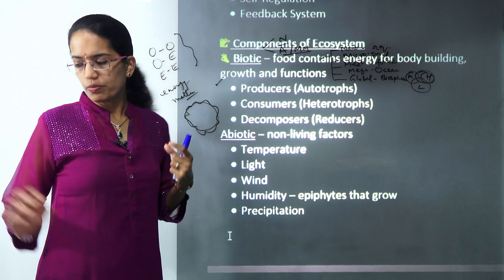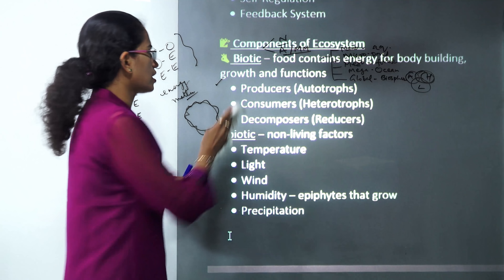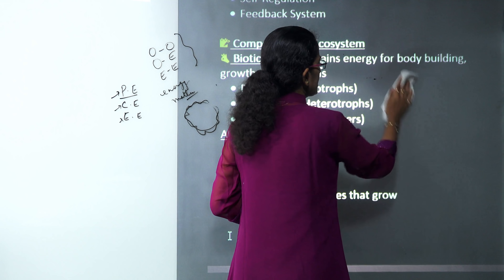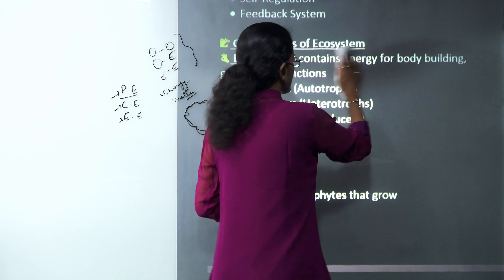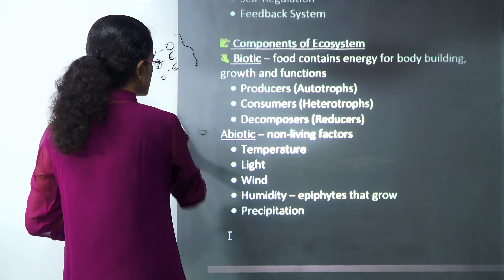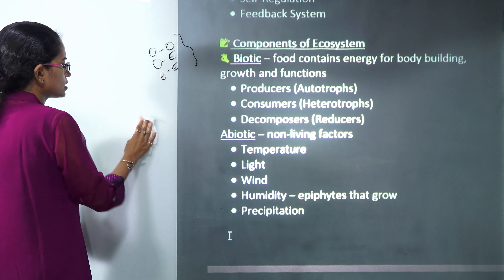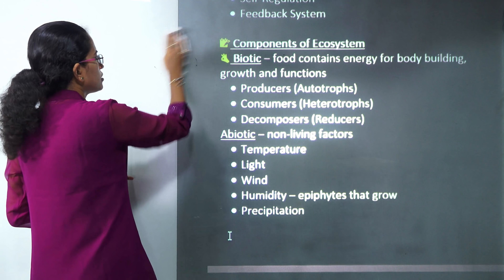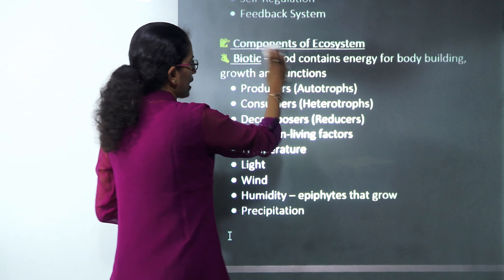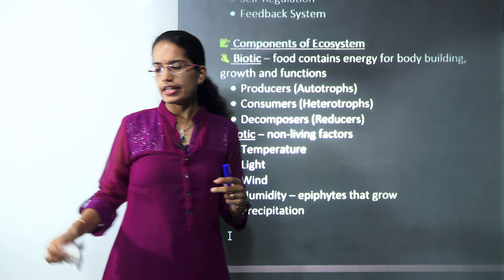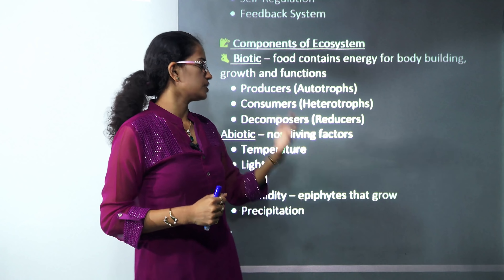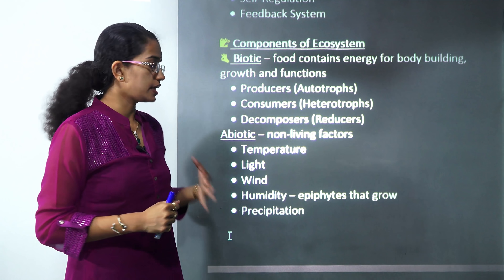Components of the ecosystem can be broadly classified into biotic and abiotic. Biotic means related to living beings; abiotic talks about non-living factors. Biotic factors can be further classified into three types: producers, consumers, and decomposers.